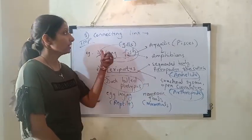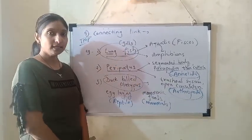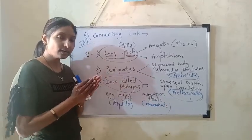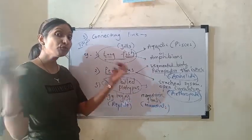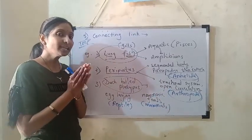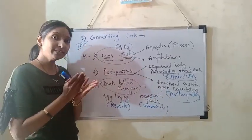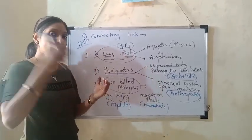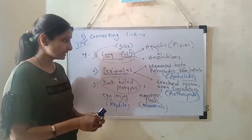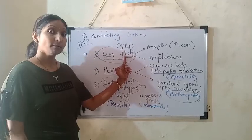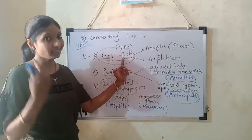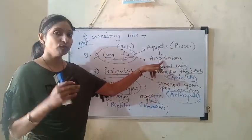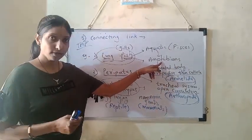We discussed connecting links — animals possessing characters of two different groups, showing evidence that one animal evolved from another. For example, lungfish: being a fish, it has lungs, meaning aquatic animals evolved into amphibians.